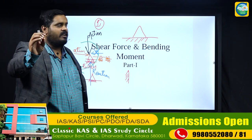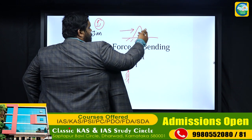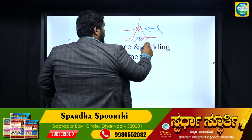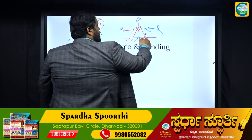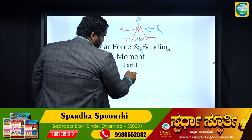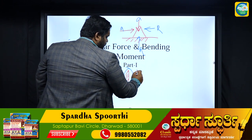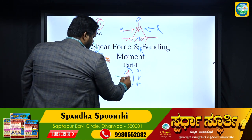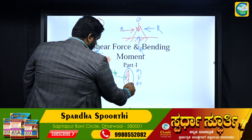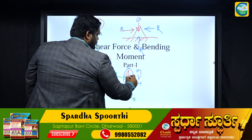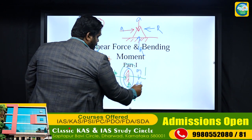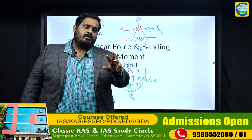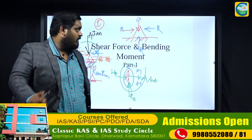A roller support does not resist horizontal force, bending moment, or shear force — only vertical force. A hinge support resists both horizontal and vertical forces, giving two reactions. A fixed support resists vertical force, horizontal force, and moment — giving three reactions. So: fixed support has 3 reactions, hinge has 2 reactions, and roller has 1 reaction.